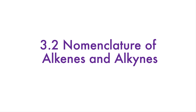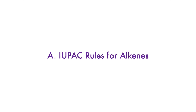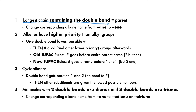Quickly review video 3.1 if you don't remember the basic IUPAC rules. In alkenes, the longest chain containing the double bond is the parent — it may not be the longest chain overall, but it must contain the double bond. Change the -ane ending of the corresponding alkane to -ene. The double bond has higher priority than alkyl and other lower priority groups. Number in both directions and give the double bond the lowest possible number, then number alkyl and other lower priority groups based on this.